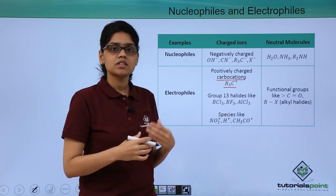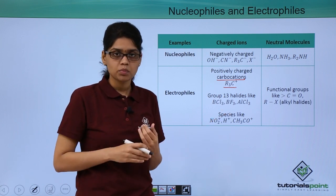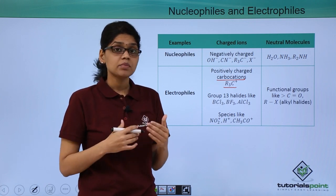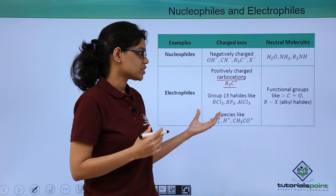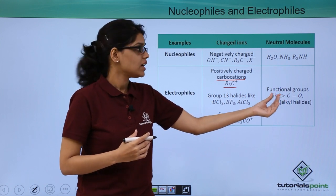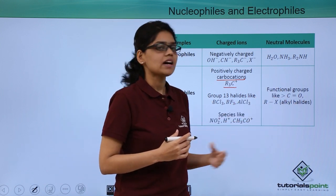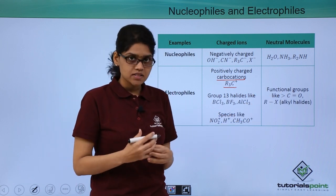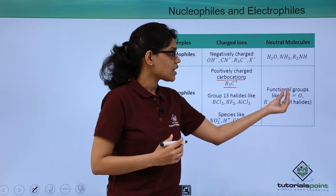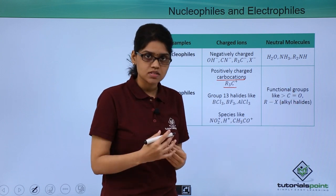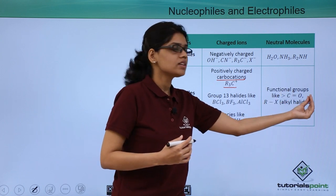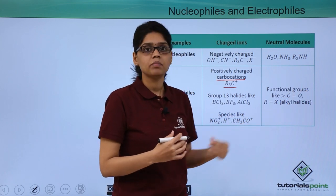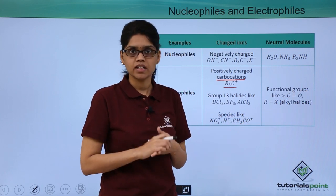Other positively charged species like NO₂⁺, H⁺, and CH₃CO⁺ also act as electrophiles. Examples of neutral species which act as electrophiles are functional groups like C=O and alkyl halides. In C=O, the carbon is attached to electronegative oxygen, which withdraws electrons towards itself, creating a partial positive charge on carbon and making the carbon electrophilic in nature.